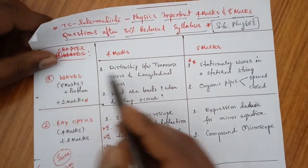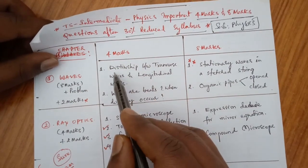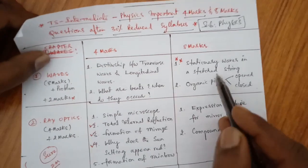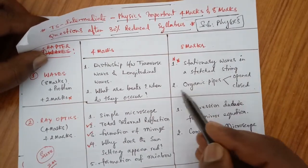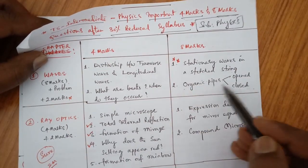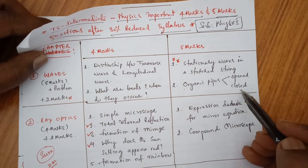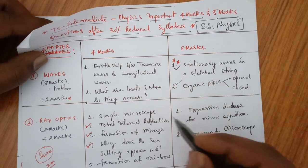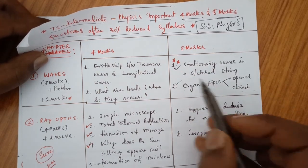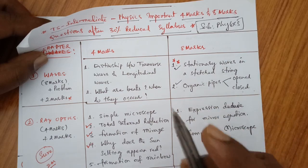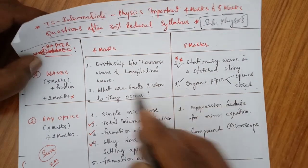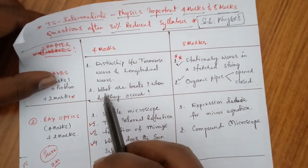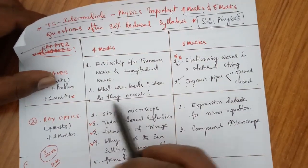First chapter is Waves. For 8 marks questions: stationary waves in a stretched string, and open organ pipe and closed organ pipes — these two are very, very important. Note that Doppler effect has been removed from the syllabus. For 4 marks: distinguish between transverse waves and longitudinal waves. What are beats? When do they occur?